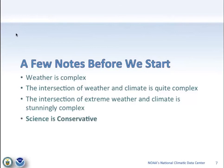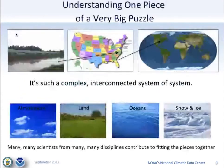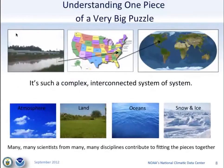Weather is complex. Weather and climate together are really complex. Crazy weather and climate at their intersection is exceedingly complex. Science is conservative, so a lot of the findings produced through climate science using climate data are really the most confident of a whole collection of intuitions about the relationship between weather and climate. What establishes that confidence is stable data.